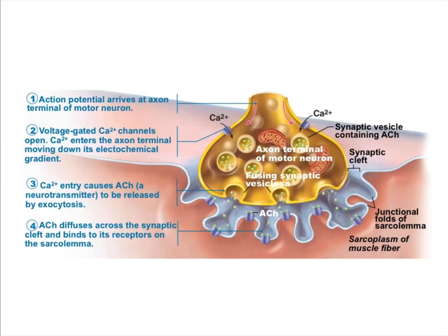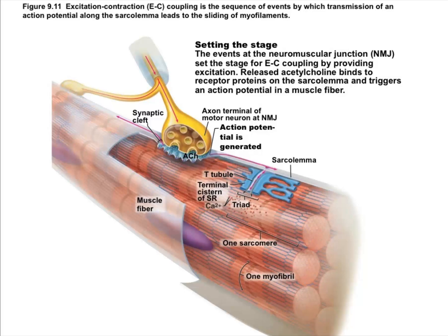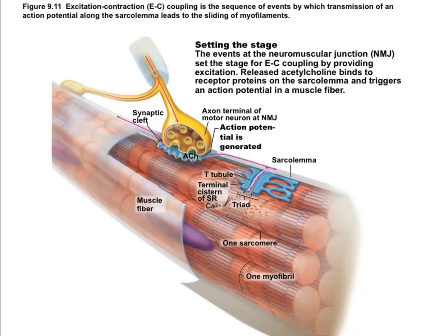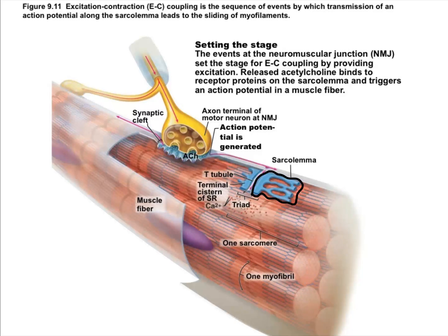What that means is that an action potential travels along the muscle fiber — and remember, muscle fiber is just a synonym for muscle cell or myocyte. The sarcolemma can transmit action potentials the same way an axon can. So we get our graded potential, which triggers an action potential that travels all along the sarcolemma and also down into the T tubules. That's important because the T tubules are lined up right against the sarcoplasmic reticulum.